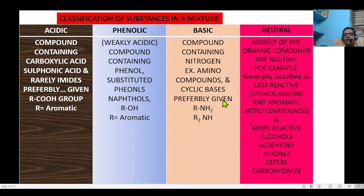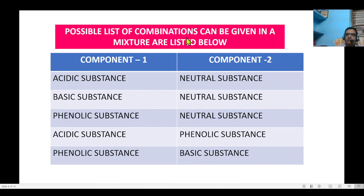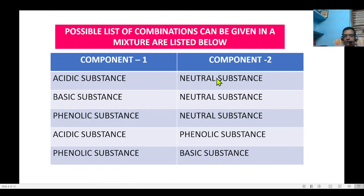All these categories are given in combination in the examination. The possible list of combinations includes: acidic and neutral, basic and neutral, phenolic and neutral, acidic and phenolic, and phenolic and basic. In the examination, one student may receive acidic and neutral, another basic and neutral, others phenolic and neutral, acidic and phenolic, or phenolic and basic — any of these combinations may be given for the separation purpose.